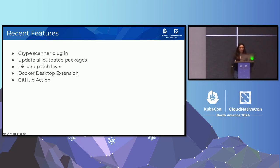We've also added support to discard the patch layer, and this was a contribution through the LFX Mentorship Program. This really optimized Copa because regardless of how many times you patch an image, Copa would only create one new layer, which decreases the size of the resulting images. And finally, we've also added integrations in Docker Desktop, so you don't have to download the Copa CLI. You can use Copa directly in Docker Desktop and as a GitHub Action, so you don't have to download Copa in your pipelines — you can use it directly in your GitHub workflow.